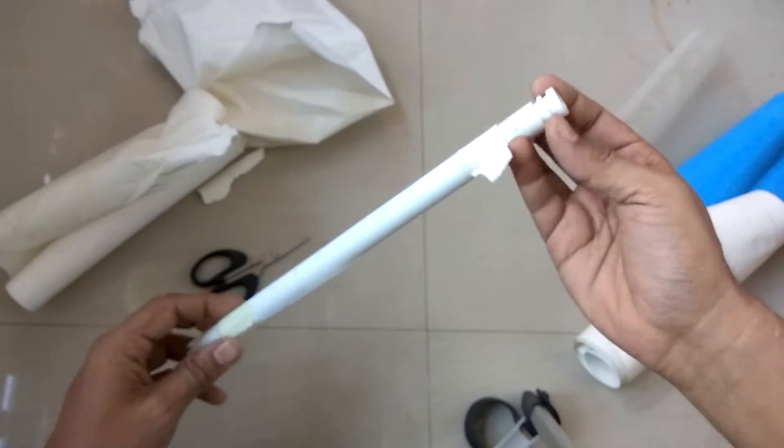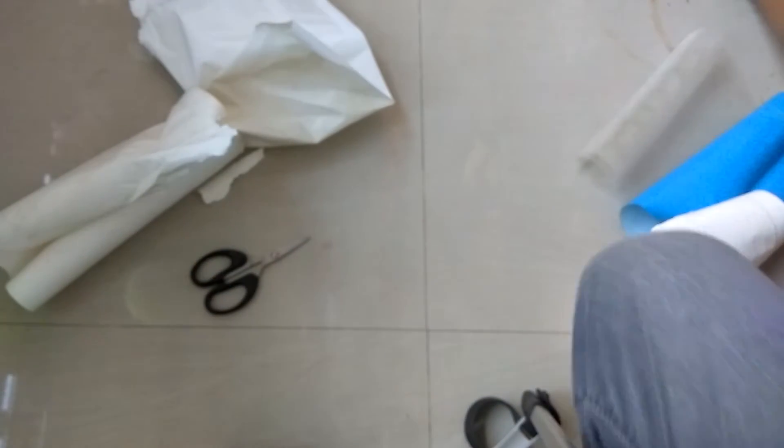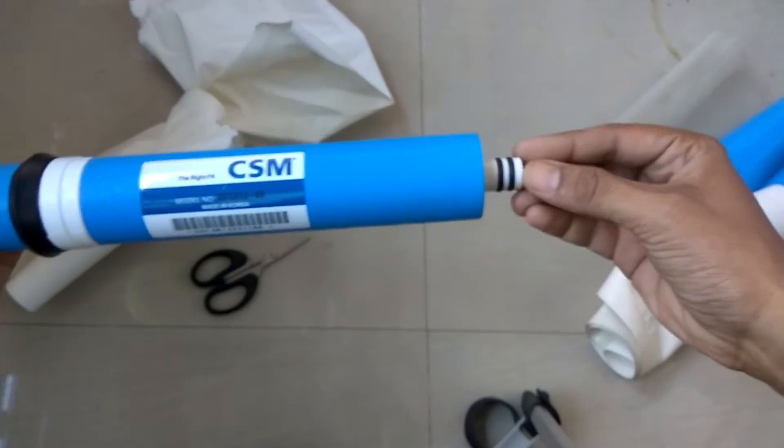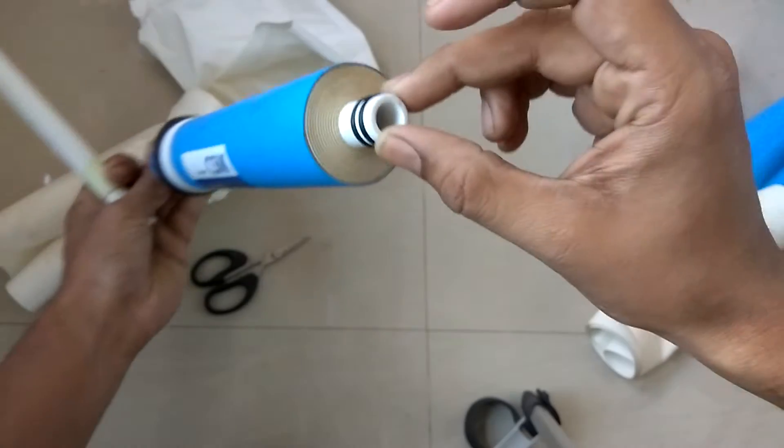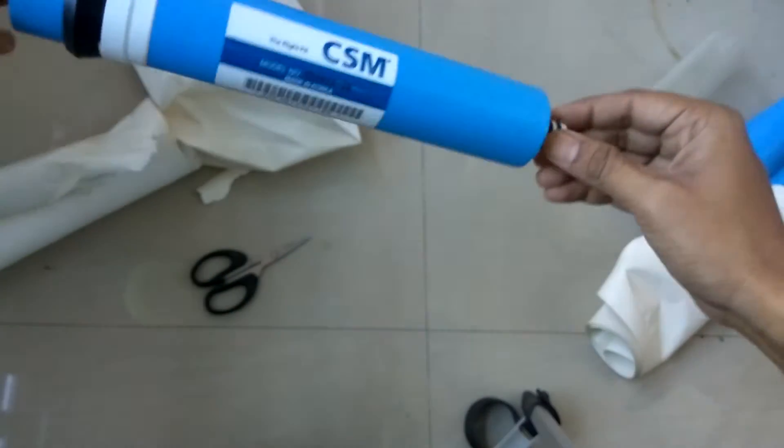Over here there are two gaskets which I removed. I'll show you another membrane. Like this, two gaskets, then the product water comes out from here.